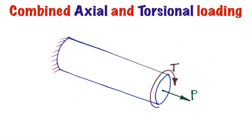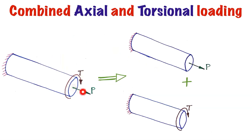First we will be taking a case where combined axial and torsional loading are acting on a shaft. Here you have a shaft subjected to axial loading P and twisting moment or torque T, and you have to find the critical cross section as well as critical elements. We will apply the principle of superposition, where the combined effect of both loads acting together can be split and taken as the sum of the two individual effects. The axial force and torque acting together are split into individual cases.